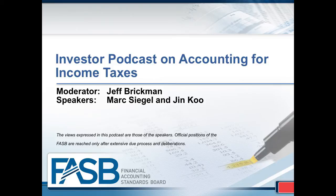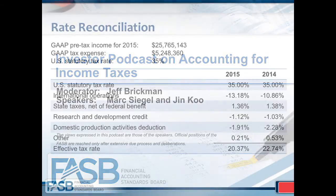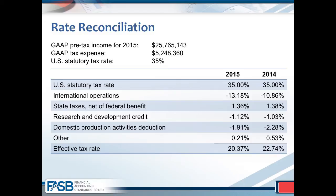Jin, can you go into more detail about the rate reconciliation and how an investor might use it? Investors can use the rate reconciliation to analyze whether individual line items will be sustainable contributors to a company's effective tax rate or are just one-time adjustments. On this slide, GAAP pre-tax income is $25.8 million and GAAP tax expense is $5.2 million. At the top of the reconciliation you can see the standard U.S. tax rate of 35%, and at the bottom this company's effective tax rate of about 20% in 2015.